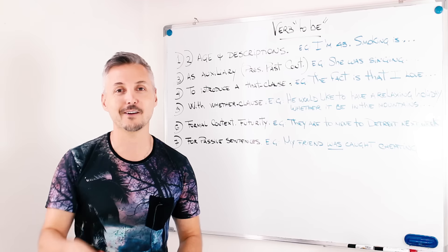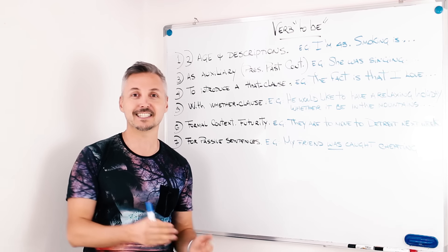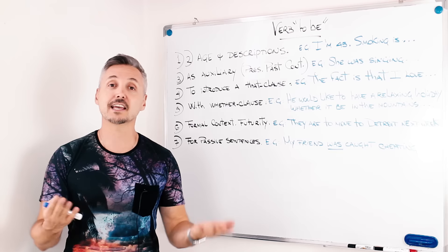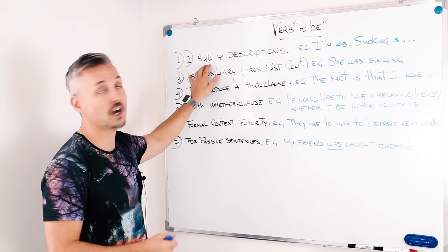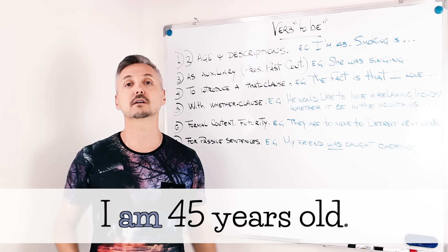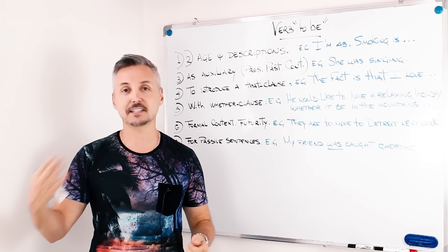If you don't remember, don't worry. We're going to review it in this lesson. So the first example that I gave you was talking about age. So I am 45 years old. You are 19 years old, etc.